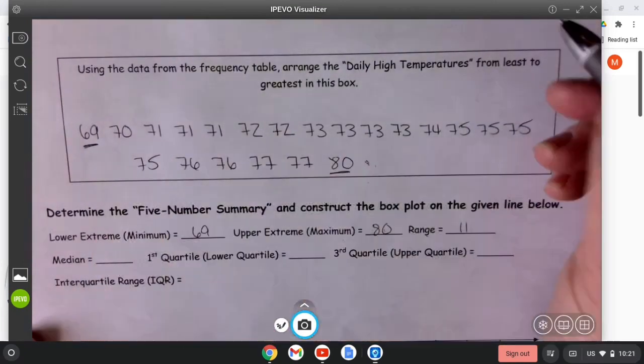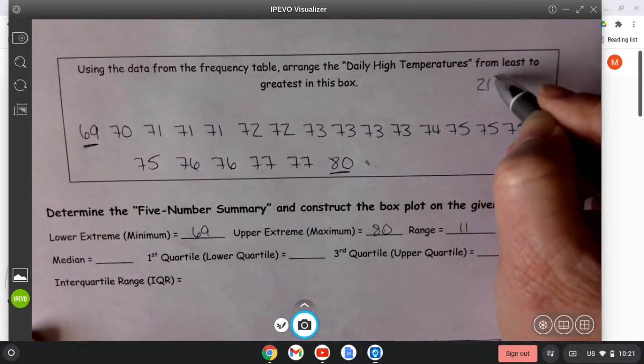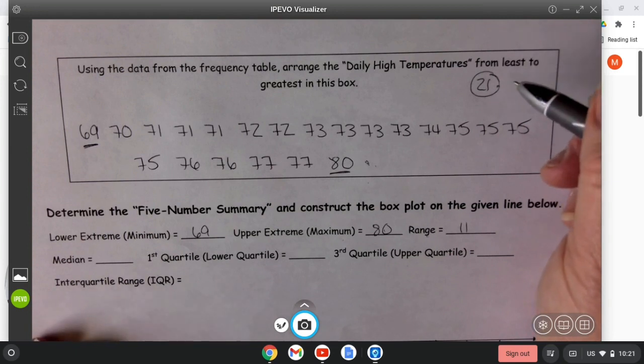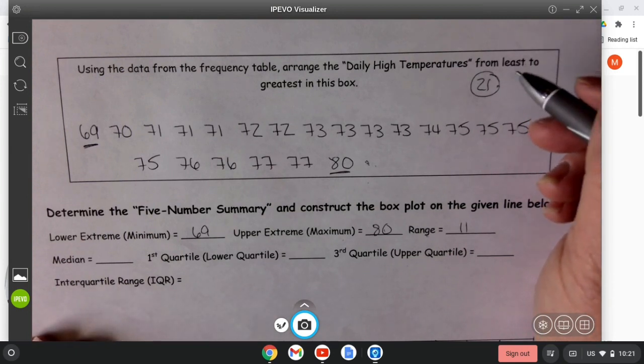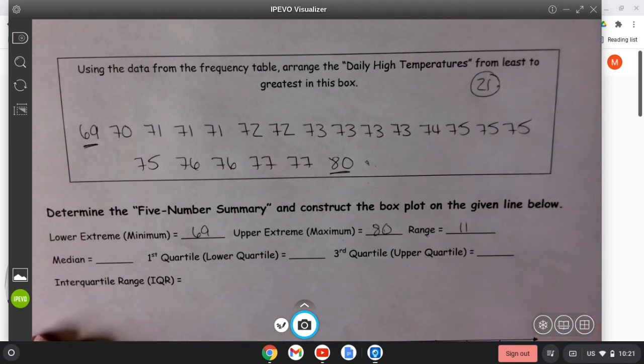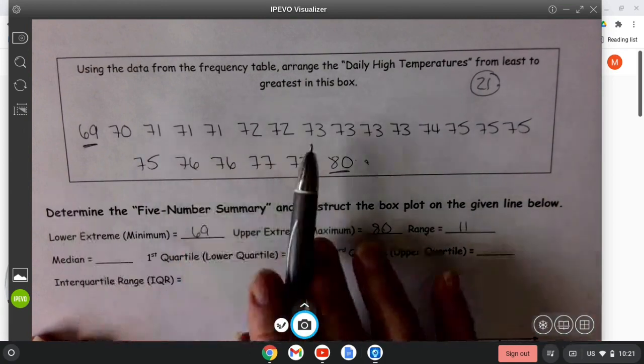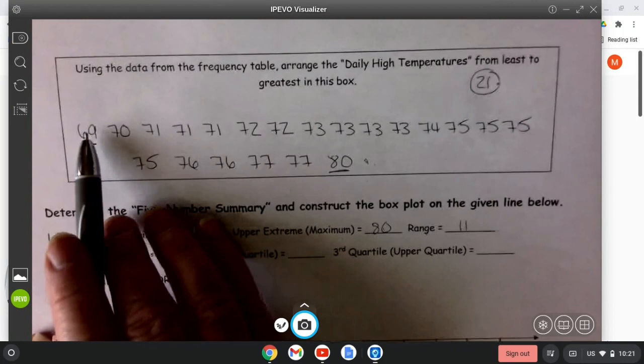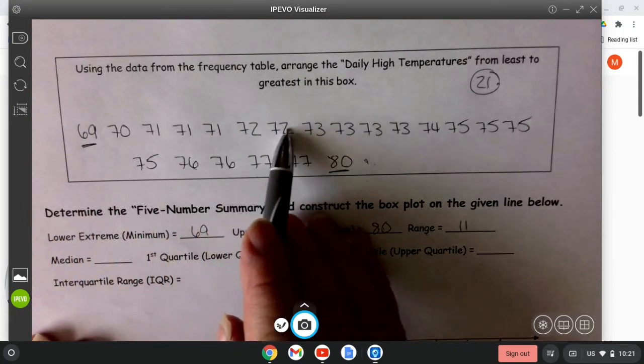One thing that I try to teach them: since there are an odd number of data in our data collection, there is going to be a middle number, and so I try to get them to guess where that middle number is going to be. This time we could say it's going to be 10 numbers in the middle, then 10 more numbers. So I'm just going to count to 10.